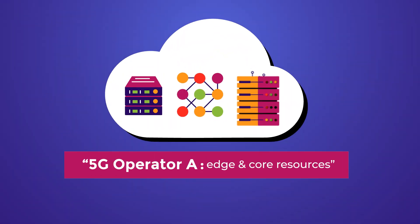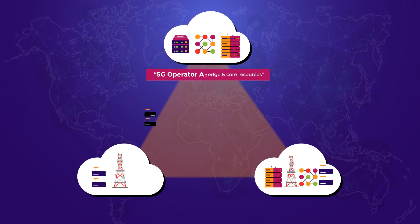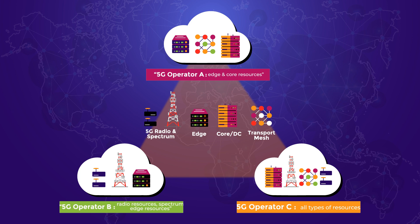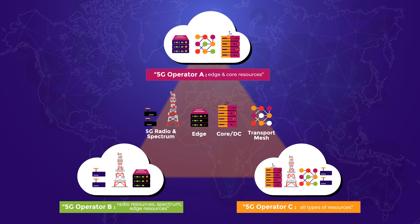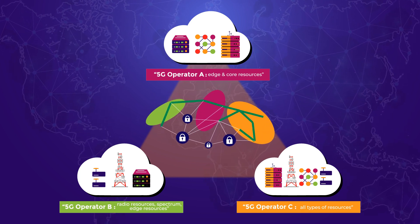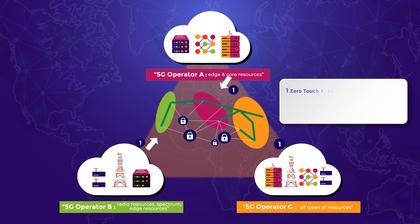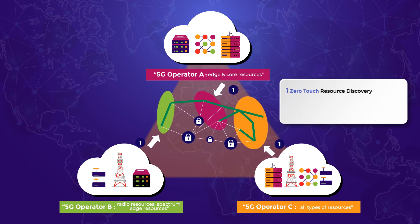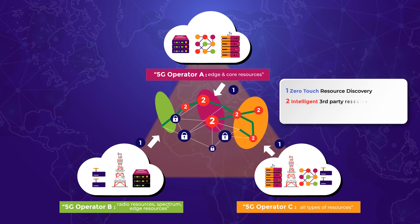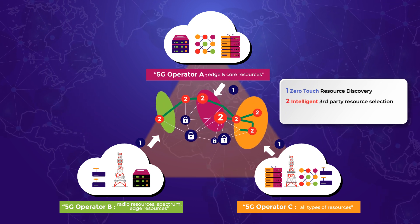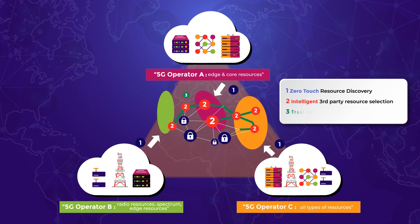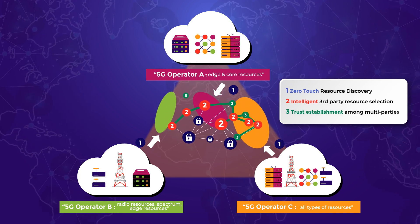Multiple 5G operators with different technologies and geographical span would be able to collaborate for better ubiquitous services. Through the 5G Zorro innovative platform, it is possible to execute zero-touch resource discovery using DLTs for trust and security, intelligent third-party resource selection, requests, and access and/or use, and trust establishment among multi-parties.